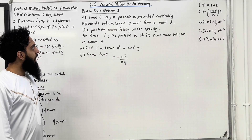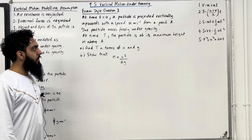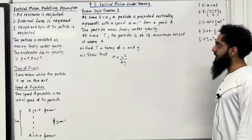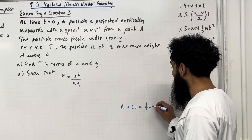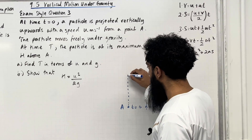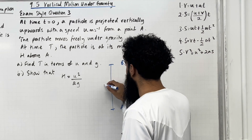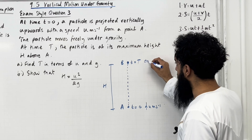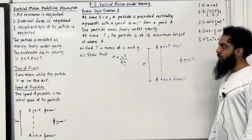Moving on to exam style question 3. At time T = 0, a particle is projected vertically upwards with a speed u metres per second from a point A. The particle moves freely under gravity. At time T, the particle is at its maximum height H above A. Part A: find T in terms of u and g. I'm going to draw a diagram: at time T = 0, the particle is at A with speed u metres per second upwards. It reaches maximum height H at point B at time T, where velocity = 0. Acceleration due to gravity is g downwards.